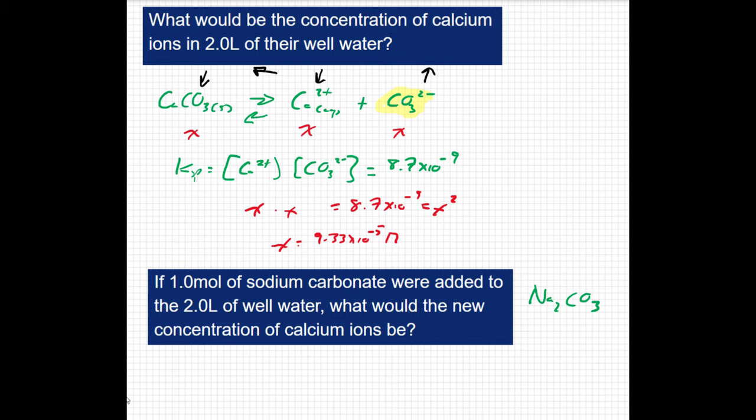Let's do the work now. We know that Ksp is going to equal the concentration of calcium ions, and that's what we're looking for here, times the concentration of carbonate ions.